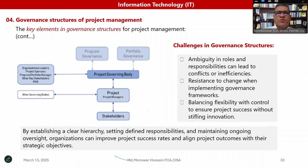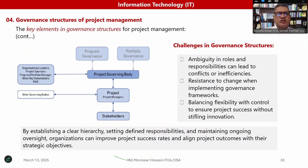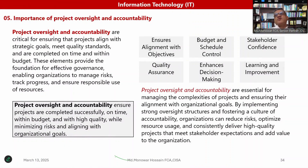By establishing clear settings, defined responsibilities, and maintaining ongoing oversight, organizations can improve project success rates and align project outcomes with their strategic objectives. Project oversight and accountability are separate but critical subtopics within IT project management. Project oversight and accountability are critical for ensuring that projects align with strategic goals, meet quality standards, and are completed on time and within budget.